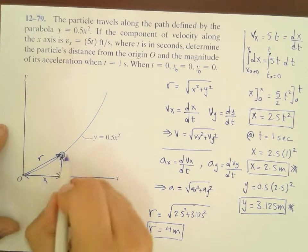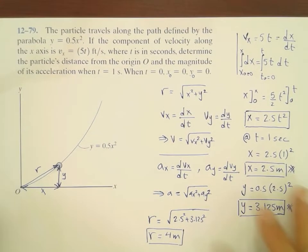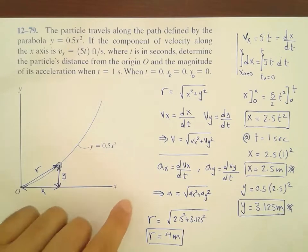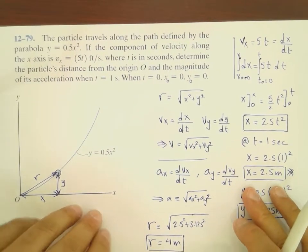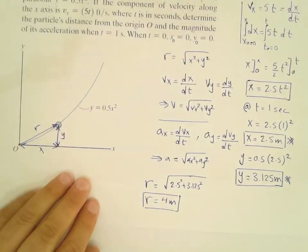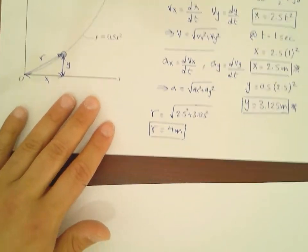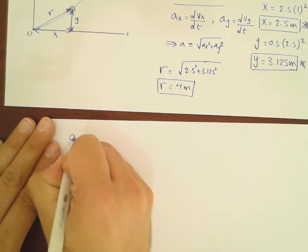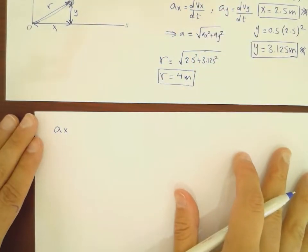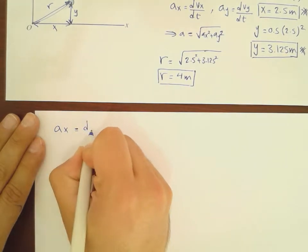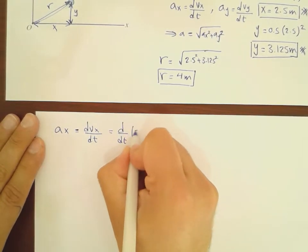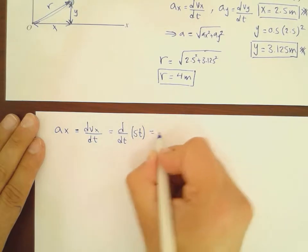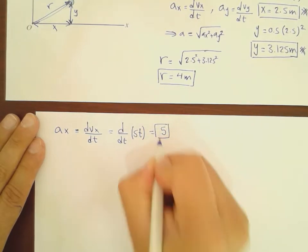Moving to the acceleration of the particle, we use the relationships outlined earlier. For the X component of acceleration, aX equals dVX over dt, which equals d/dt of 5t. Differentiating gives aX equals 5 m/s². This is the X component of acceleration.